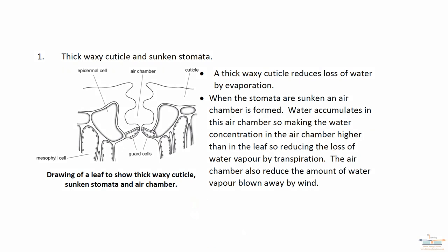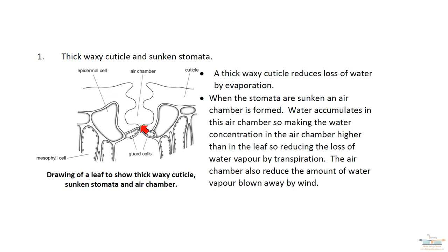Starting with thick waxy cuticle and sunken stomata: in this drawing, we have a thick waxy cuticle on the upper surface of the leaf, just above the epidermal cells. It is very thick, and what it does is reduce water loss by evaporation — not transpiration, which is water loss from the stomata. The thicker the waxy cuticle, the less evaporation of water takes place.